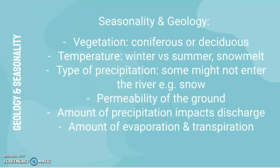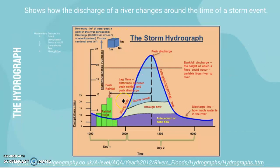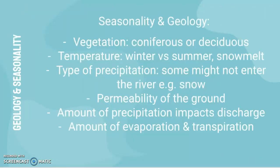Now looking at seasonality and geology — vegetation type, whether coniferous or deciduous, impacts interception. More interception means a shallower rising limb because rainfall is intercepted by vegetation, which would also likely lead to a lower peak discharge and a larger lag time, reducing the intensity and magnitude of flooding.